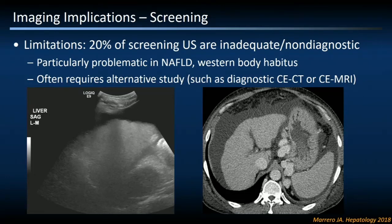That screening recommendation mirrors many of our sister-society colleagues, but there is a pragmatic implication in the United States that's somewhat unique: about 20% of screening ultrasounds are actually non-diagnostic or inadequate, because of the high propensity for metabolic syndrome or fatty liver disease to affect patients in the United States.